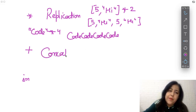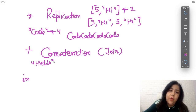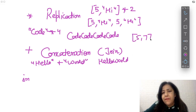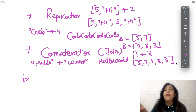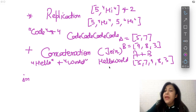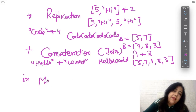The plus sign performs concatenation — it means joining. If you have 'hello' + 'world', it gives 'hello world'. Similarly, if list A has [5, 7] and list B has [9, 8, 3], then A + B gives [5, 7, 9, 8, 3] — both lists are combined. Two strings concatenated give a string; two lists give a list; two tuples give a tuple. But if you try to add different data types — like an integer and a string, or a list and a string — Python will give you an error.